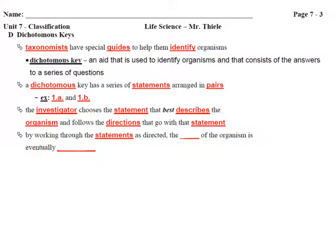By working through the statements as directed, the name of the organism is eventually discovered. This is a tool we will practice using in class a few times — we may even try to make our own dichotomous key. It's a very useful tool for the study and classification of living things.